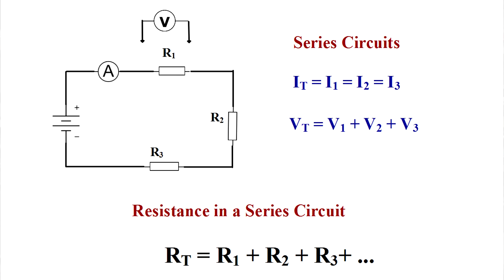For a series circuit, you calculate it like this. You just add up the resistances of each component in the circuit. Very simple.